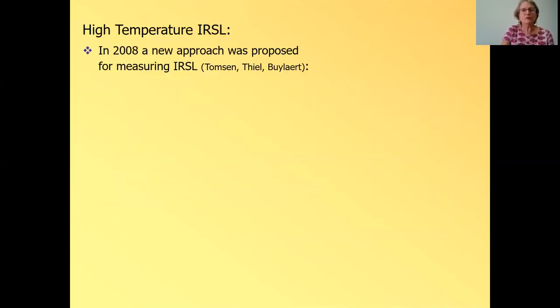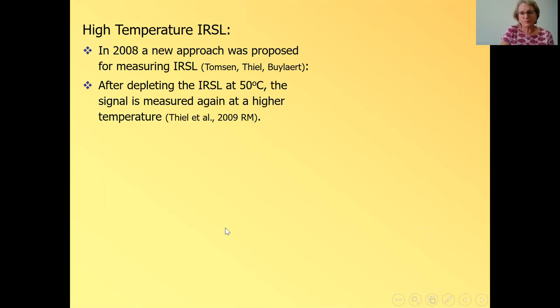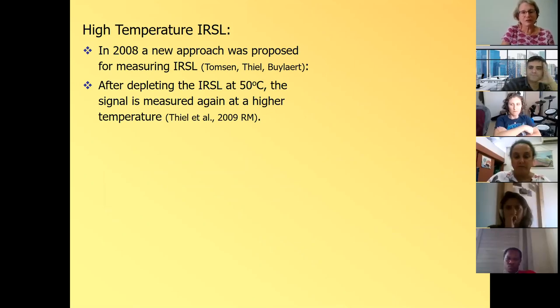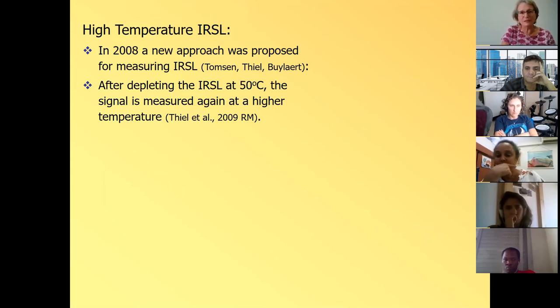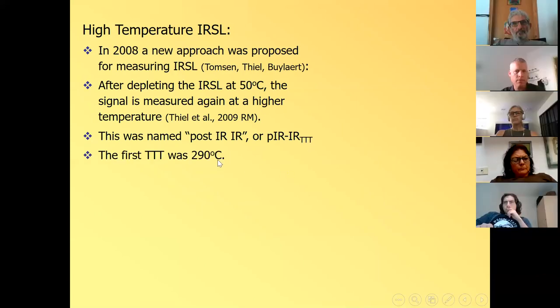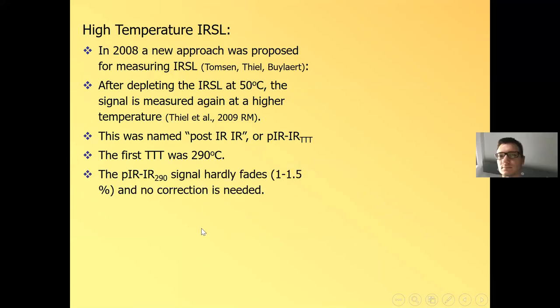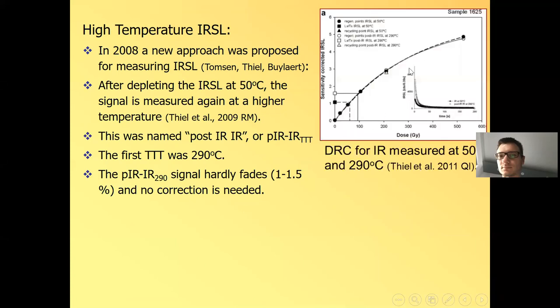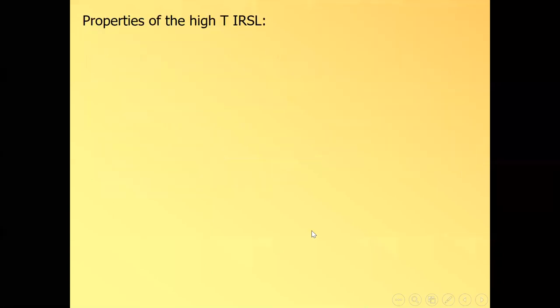So in 2008, a new approach was proposed for measuring IRSL with this group of researchers from the University of Denmark. And the idea is like that. After we measure the IRSL 50 degrees, we deplete the signal. We measure the signal again at higher temperature. So in a way, it's similar to TTOSL. You deplete one signal and then you measure the other one. And they call this signal post IRIR or in short PIRIR. And this TTT is the measurement temperature. And it was first suggested to be quite high, 290 degrees. And when you measure fading for this signal, it hardly fades. And you can see it grows very nicely. And the signal is even brighter. This is the IR50 and this is the IR290 measured for the same sample. And you can see the signal is very, very bright.